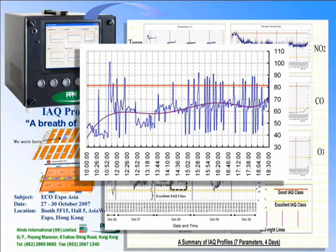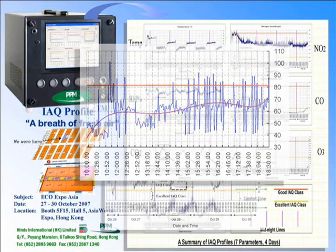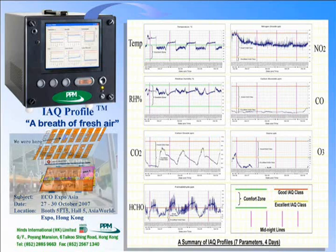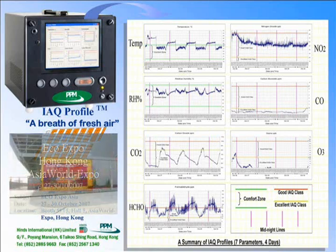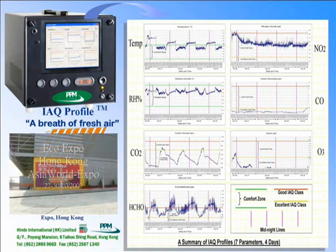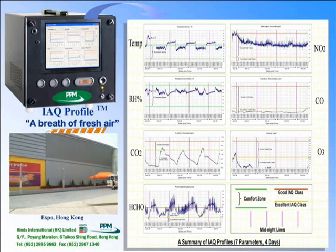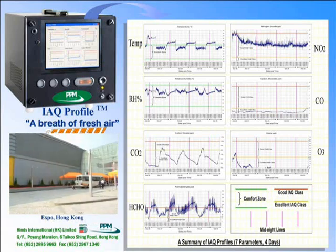There's a furniture exhibition right next to us, and formaldehyde basically comes from furniture. Also, you find that parts per billion of formaldehyde is a very low level — one thousand times a billion is one million. At this level you start measuring.